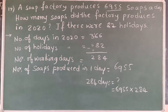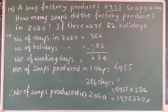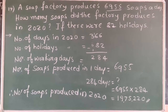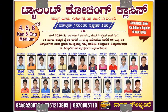Now we will calculate. After multiplying 6,955 by 284, we will get the number of soaps produced in 2020, which is 19,75,220.